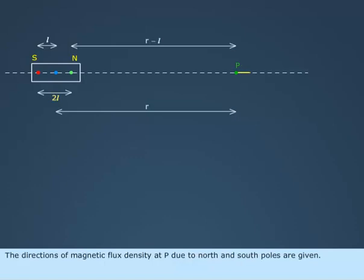The directions of magnetic flux density at P due to north and south poles are given. The resultant magnetic flux density will be in the direction of the north pole.